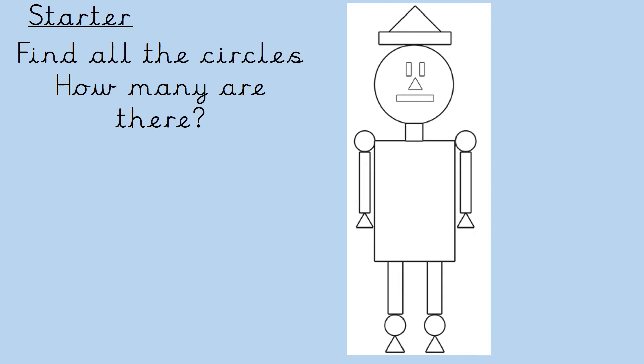Let's count them together. 1, 2, 3, 4, 5. There are 5 circles on my robot.